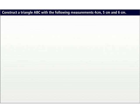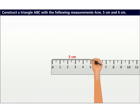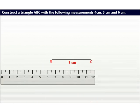with the following measurements: 4 cm, 5 cm and 6 cm. Draw a triangle with base BC of length 5 cm. With the compass, measure 4 cm on the scale. With B as center and 4 cm on the scale.